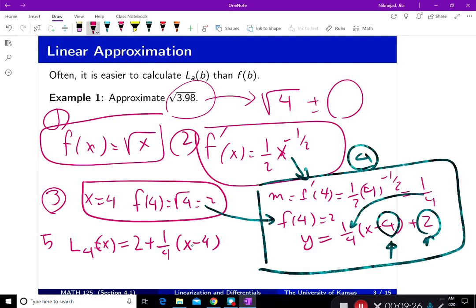Now, plug in the point that you're approximating for, the input that you're approximating for. What is that? That's the input. So you plug in L sub 4 of 3.98 and you get 2 plus 1 fourth of 3.98 minus 4. And then you compute that value. And that's going to be your approximation.